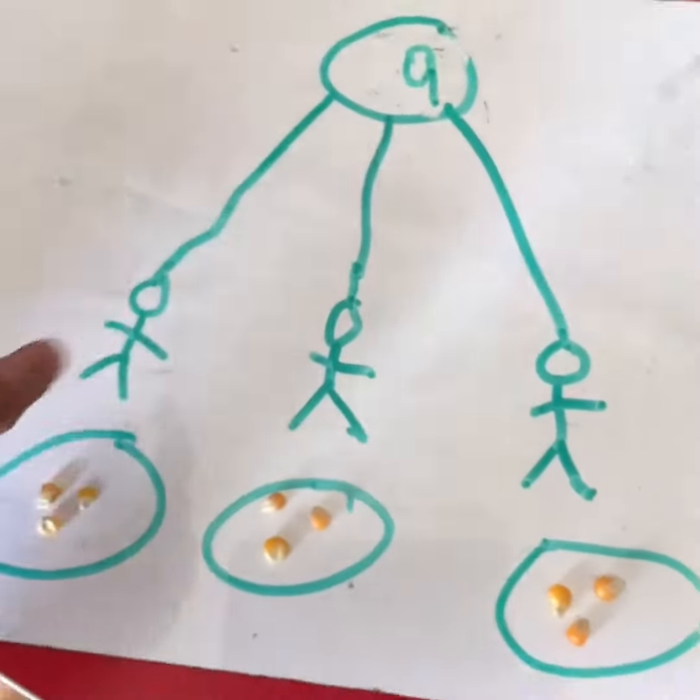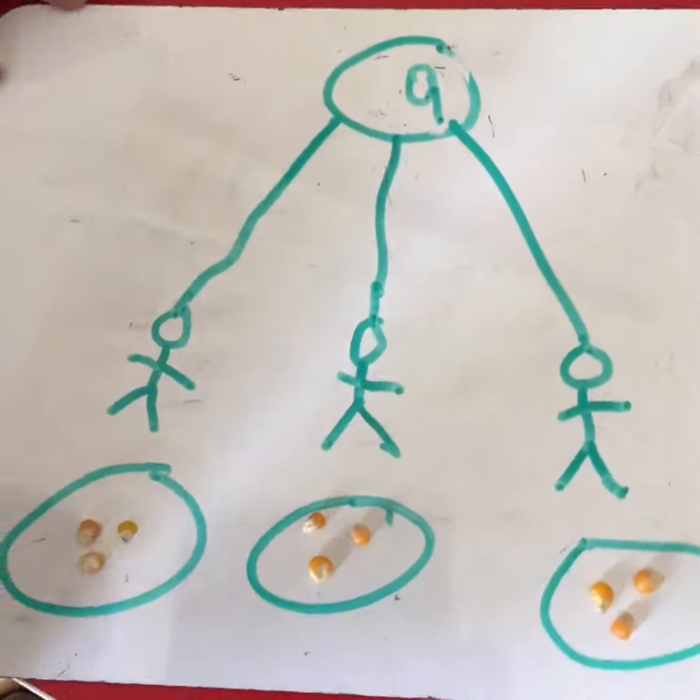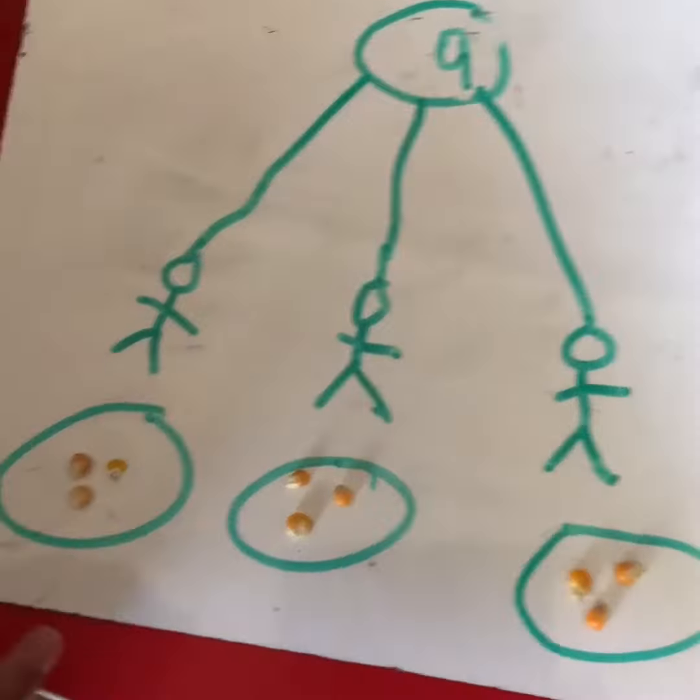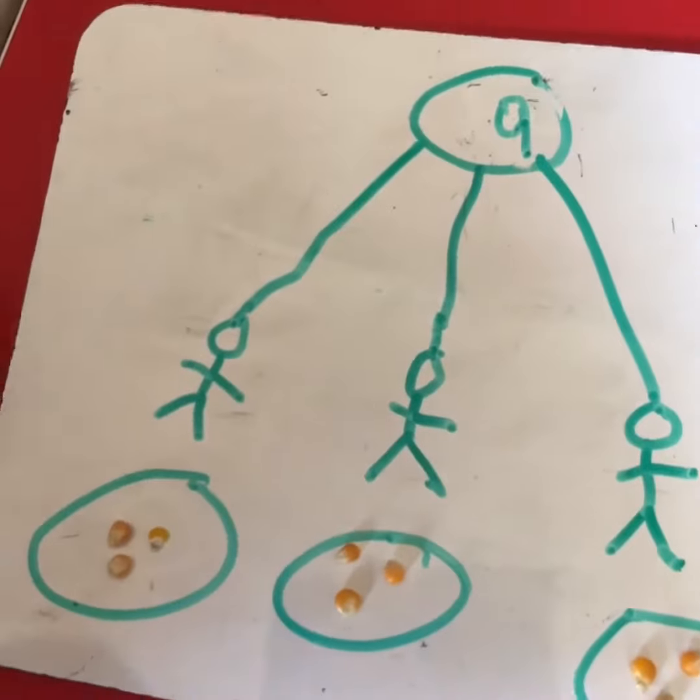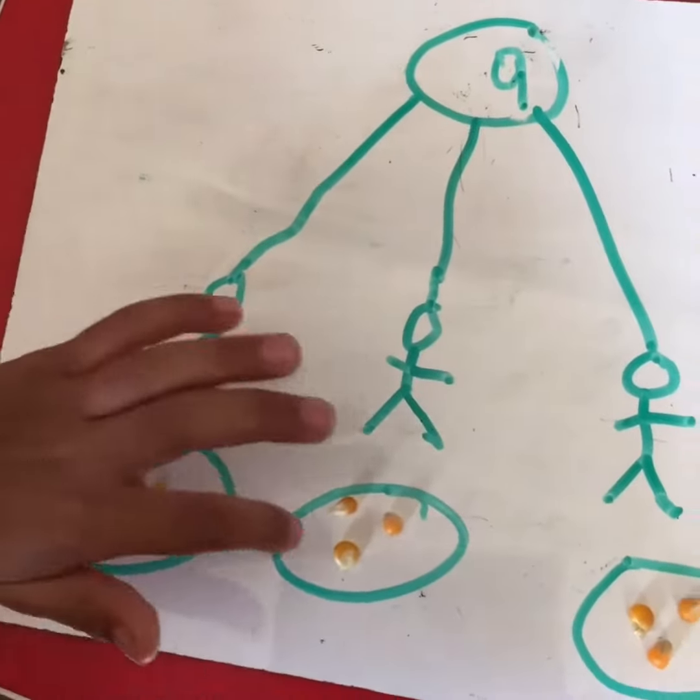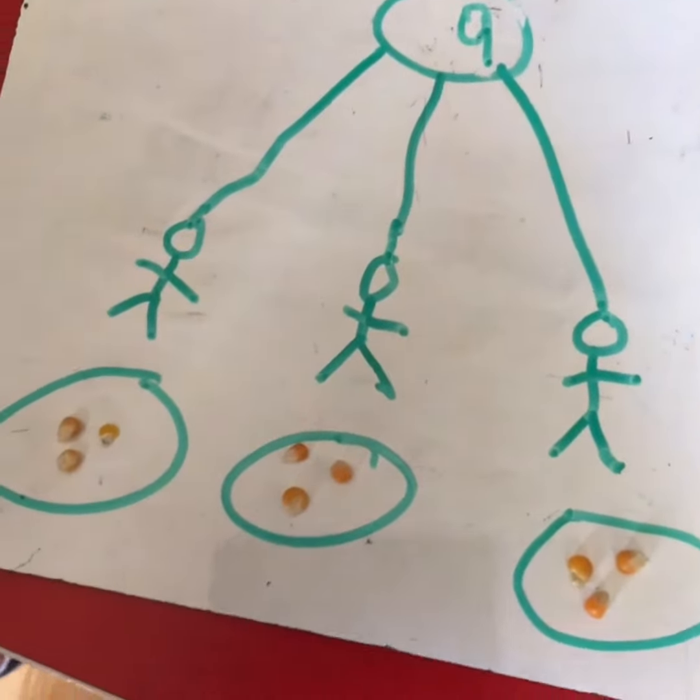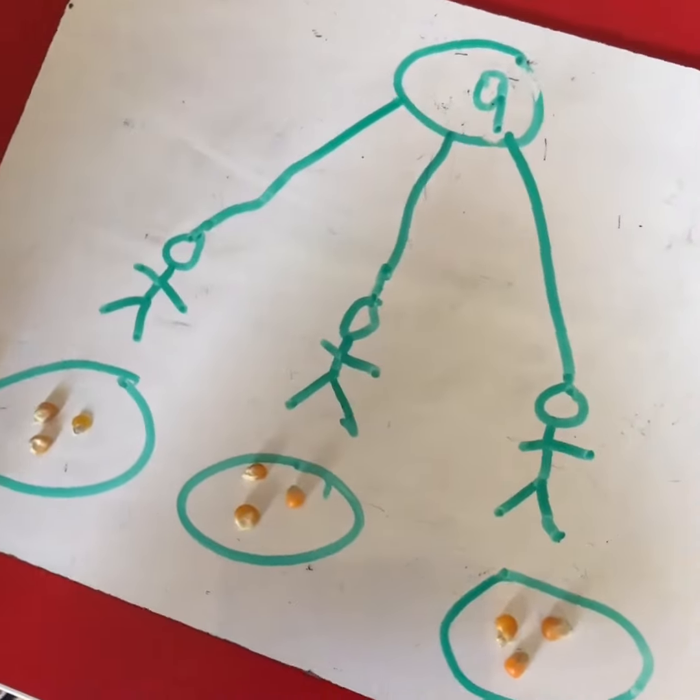If there are nine popcorns and three friends want it, then 3, 3, 3. There would be three groups of three.